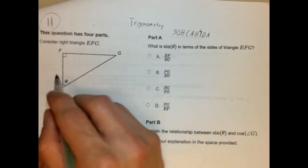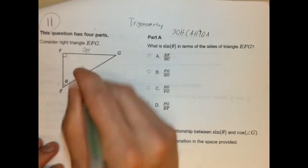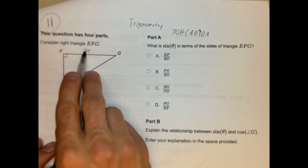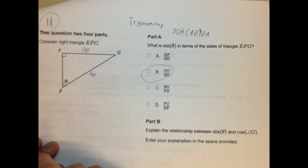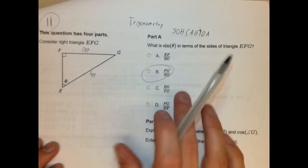So this is our theta, so this is our opposite, and this is our hypotenuse. So sine of this would be opposite over hypotenuse, so FG over EG. So that would be option B, okay? So as long as you know your trigonometric ratios, you should have no problem getting the first part done.